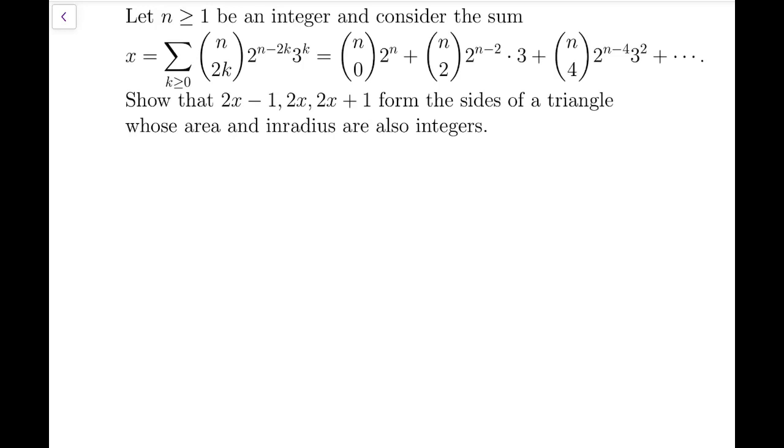This is quite a complicated problem because there are many things we'll take care of. First, we'll analyze the sum. Second, after analyzing the sum, we still have to use 2x minus 1 and the other expressions to find the area and inradius and show they are integers. It's quite tedious, so let's do it bit by bit.